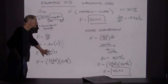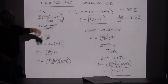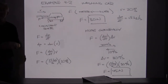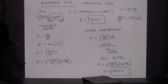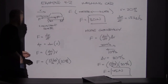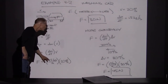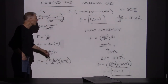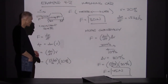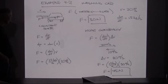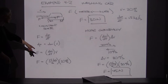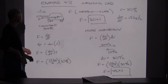dm/dt was given as 1.5 kilograms per second. Putting this together, that gives us a force of 30 newtons in this case.